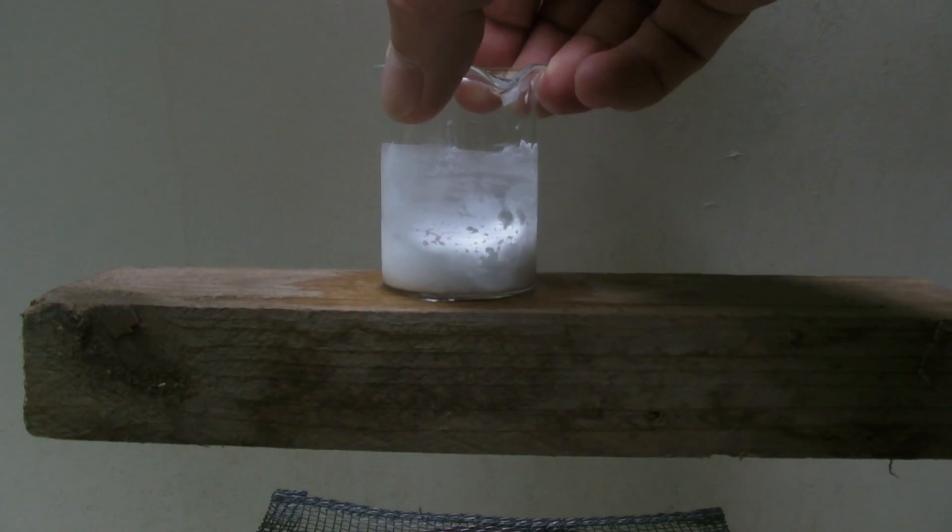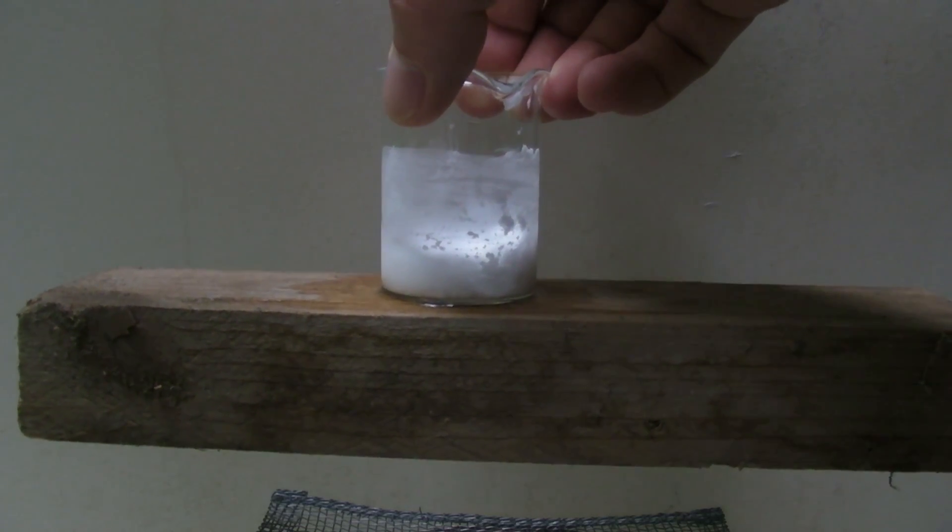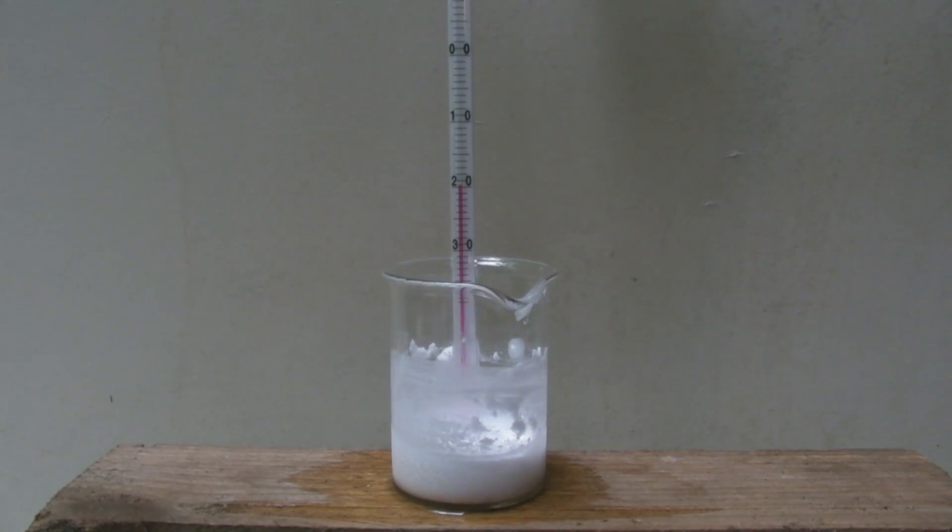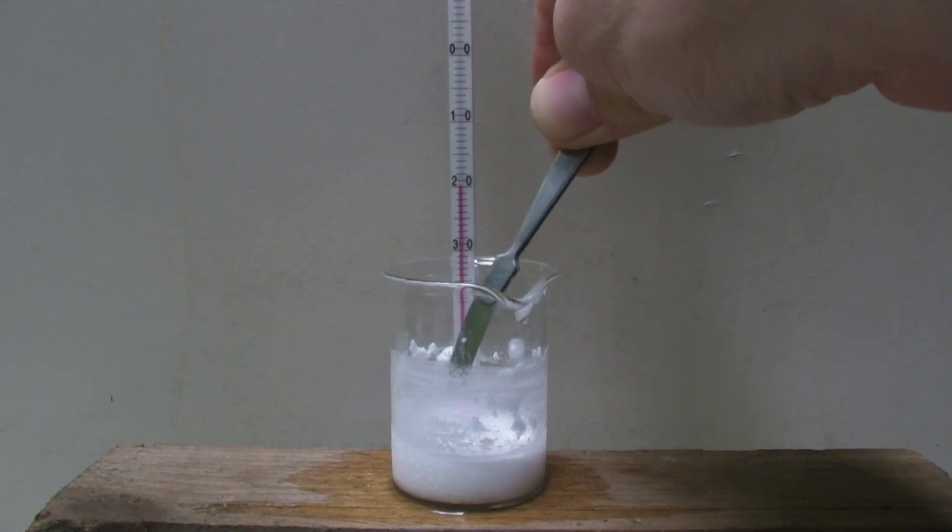The water under the beaker freezes so the beaker sticks to the wood. A wet pH paper can be used to test for ammonia gas.